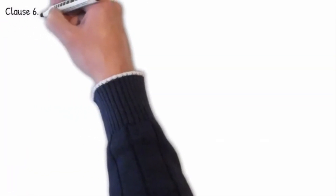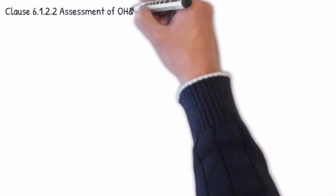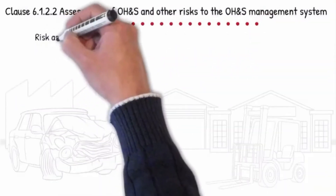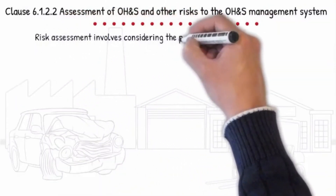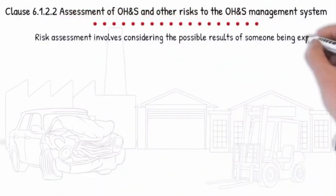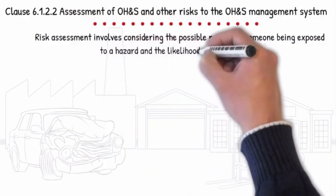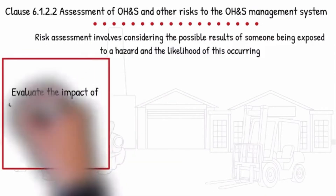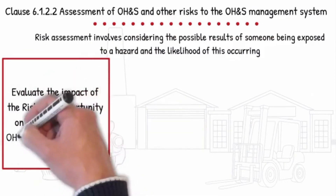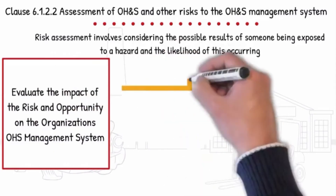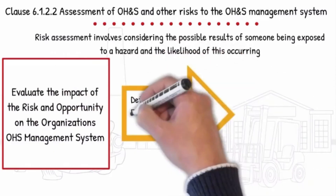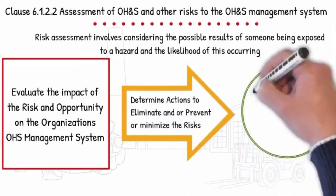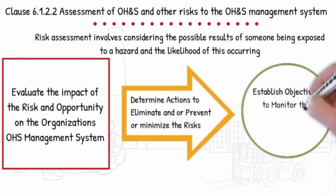Clause 6.1.2.2 Assessment of OH&S and Other Risks to the OH&S Management System. Risk assessment involves considering the possible results of someone being exposed to a hazard and the likelihood of this occurring. Evaluate the impact of the risk and opportunity on the organization's OH&S management system. Determine actions to eliminate and/or prevent or minimize the risks. Establish objectives to monitor the impact of the risks.